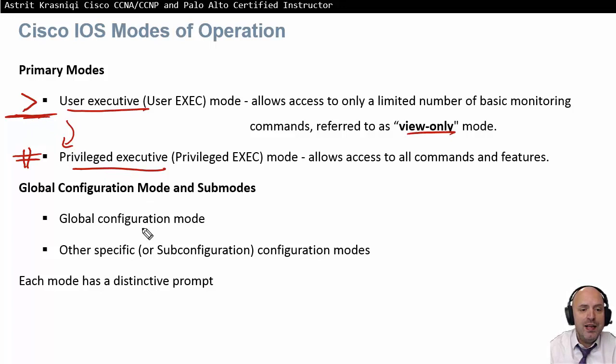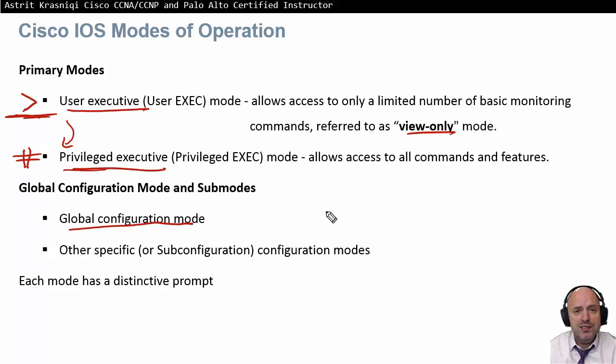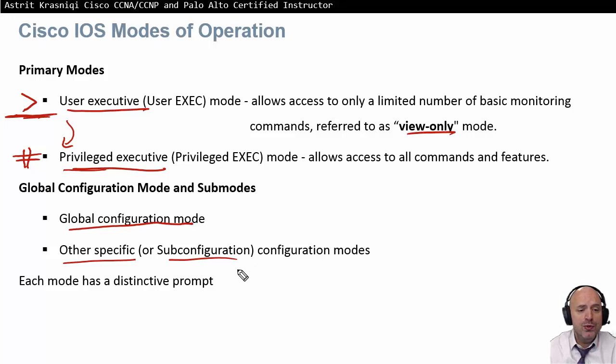After accessing privilege mode, if you want to do configuration, you need to enter the global configuration mode. Any commands done there — like hostnames and so on — take effect on the switch as a whole. There are also sub-configuration modes, such as line, VTY, and interface modes. Each mode has a distinctive prompt, which we're going to see.